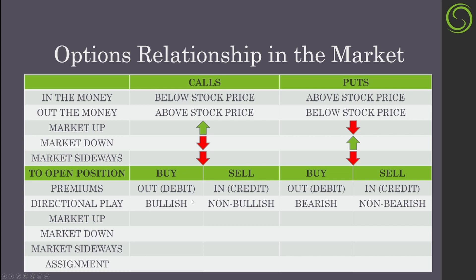When you open these positions, this is the directional play you are wanting. When you buy calls, you are bullish — you want the stock to go up. When you sell calls, you're just not bullish; you don't care if it goes sideways or down. With puts, if you buy puts you're bearish — you want the stock to go down. If you sell puts, you're just not bearish; you don't care if it goes up or sideways.